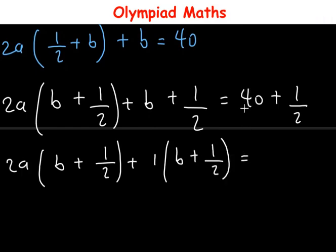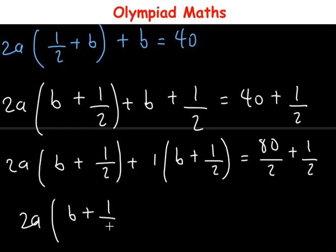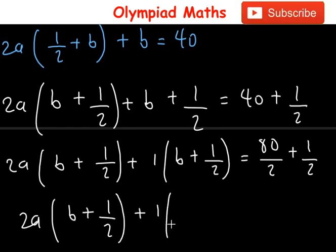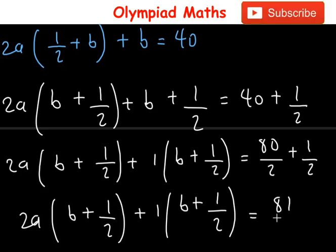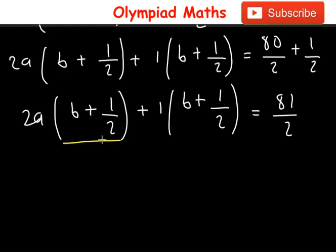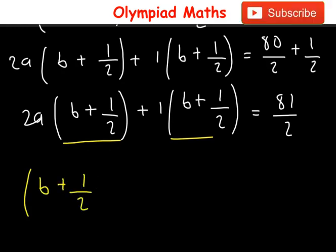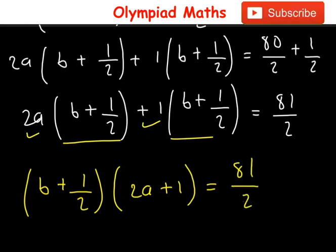And this equals 80/2 plus 1/2. We have 2a into brackets (b + 1/2), plus 1 into brackets (b + 1/2), and this equals 80/2 + 1/2, which is simply 81/2. So from this we have a common factor, which is (b + 1/2), multiplied by (2a + 1), and this equals 81/2.